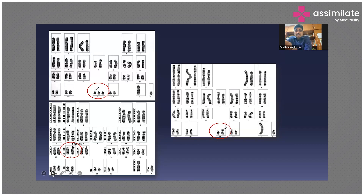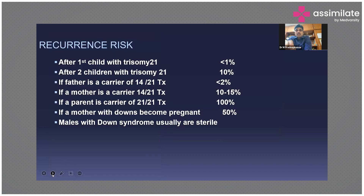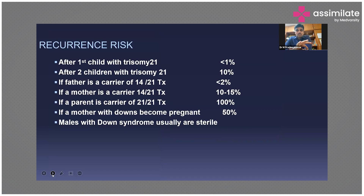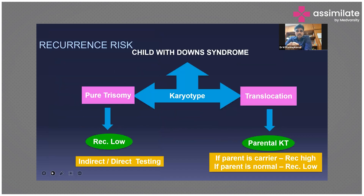Why is this important? Because knowing this, we can detect the recurrence risk. For a first child with pure trisomy 21, the recurrence risk is very low. But for a 14/21 translocation, if the parents are carriers of that translocation, the recurrence can even go up to 100%. To know the recurrence risk for a simple diagnosis like Down syndrome, we need a genetic diagnosis.